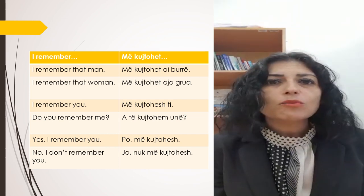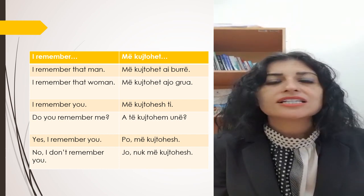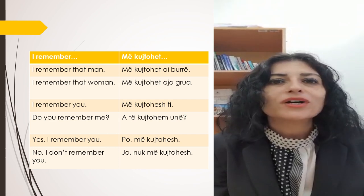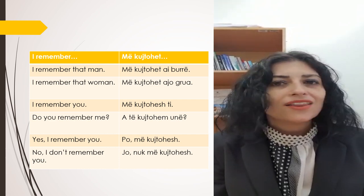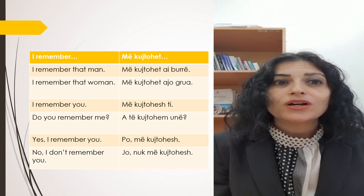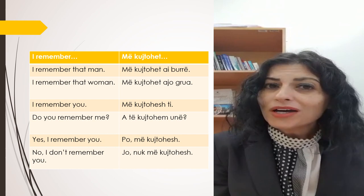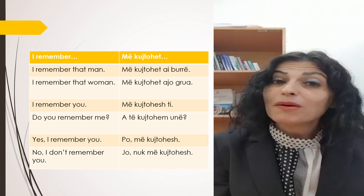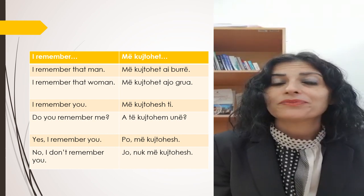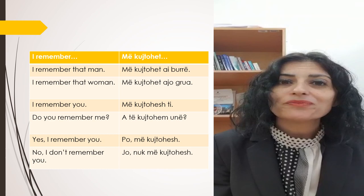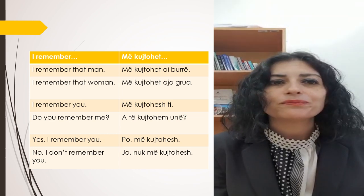For example, if you are seeing someone in the street and you can say to the person next to you: 'më kujtohet ai burrë' — I remember that man; 'më kujtohet ajo grua' — I remember that woman.